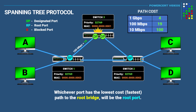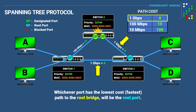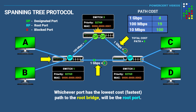As another example, let's say these two links are 1 gigabit per second each, giving them a cost of 4 each. Going back to switch 1, the cost of that path would be 4 plus 4, which equals 8, while the other path is still equal to 19. Since 8 is lower than 19, that port would be the root port. This is how root ports are determined.